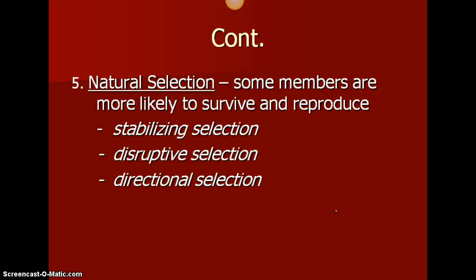And number five is natural selection. Natural selection says that some members are more likely to survive and make it to reproductive age. Now, there are three types we're going to look at, with three graphs that will go on your next page in the notes packet: stabilizing selection, disruptive selection, and directional selection.